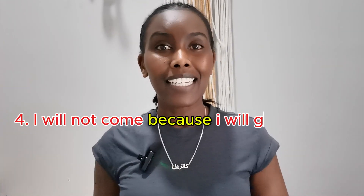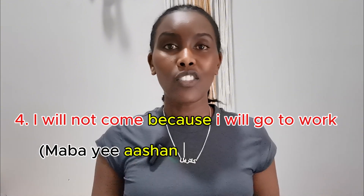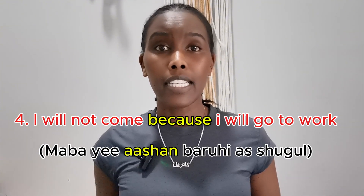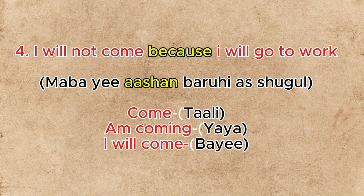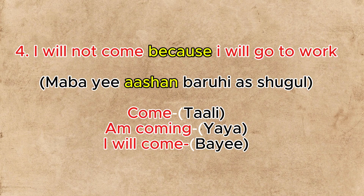Sentence four: 'I will not come because I will go to work.' Before translating, let's look at the word 'come.' In Arabic: 'sali' is the base, 'yaya' means 'I'm coming,' and 'bae' means 'I will come.' The sentence is: 'Ma bayi ashan barui ashugo' — I will not come because I will go to work.